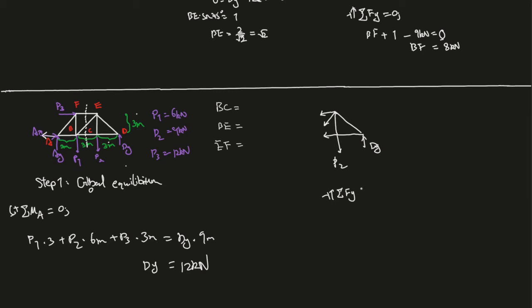Going upwards is positive, equals zero. Therefore, Dy minus P2 minus this force BE times sine of 45 degrees gives you zero. Dy minus P2, so Dy is heavier than P2, 12 minus 9 equals 3. We know there are more forces going upwards and we need this force to counter it.